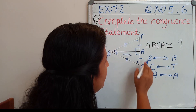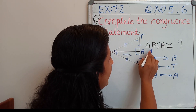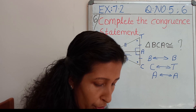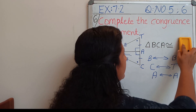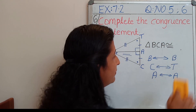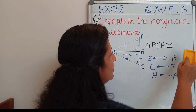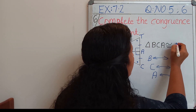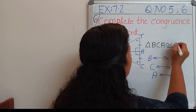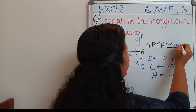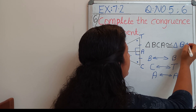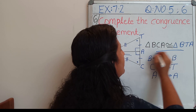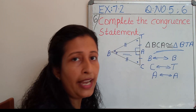So we can write down: triangle BCA is congruent to triangle BTA. So we got the answer.